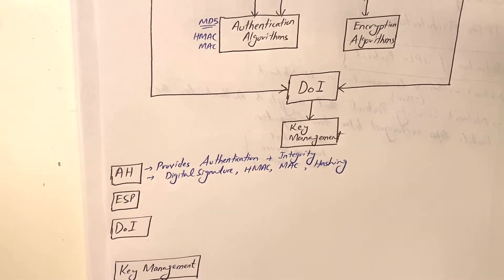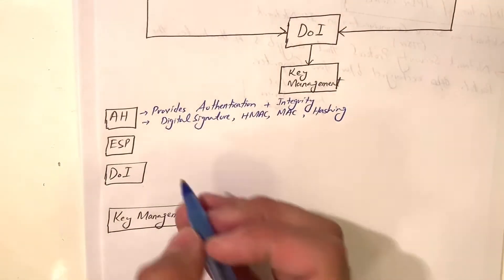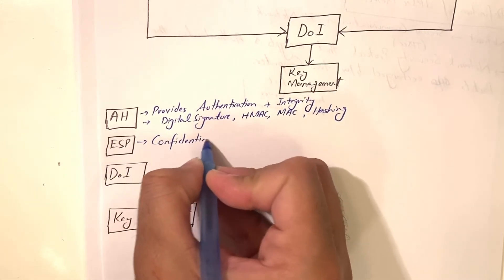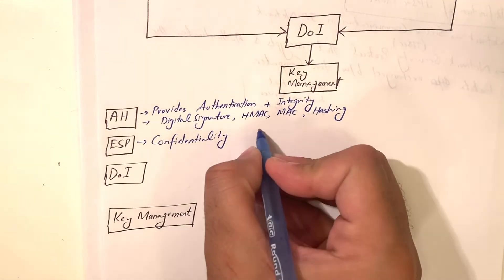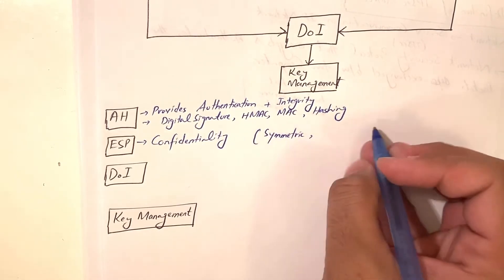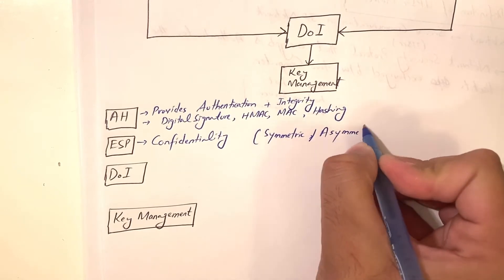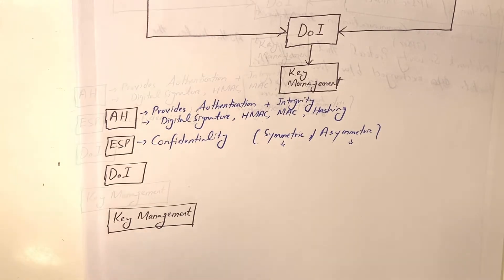Then we have ESP, Encapsulating Security Payload, which is responsible for confidentiality. It gives the network administrator the option to use symmetric encryption like AES, Triple DES, Blowfish, CAST, or asymmetric encryption like RSA and Elliptic Curve Cryptography, among other algorithms.